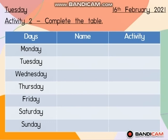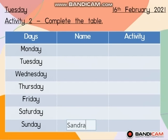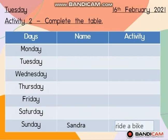Hi, I'm Sandra. I ride my bike on Sundays. Sandra rides her bike on Sundays. In the table, write down the name Sandra. What is her activity? Ride a bike — write it down here: ride a bike.